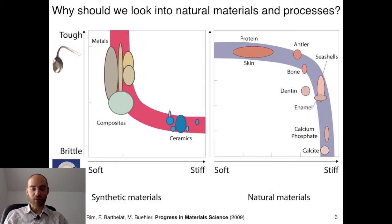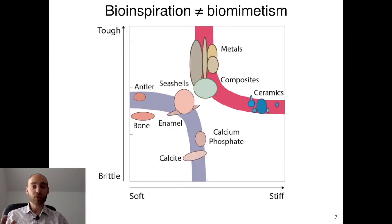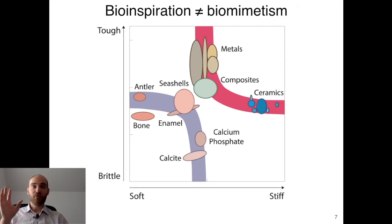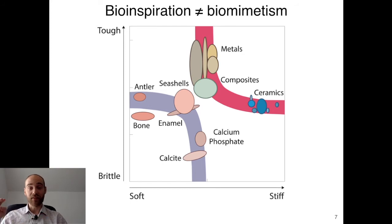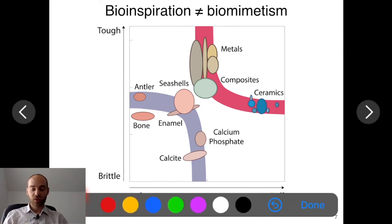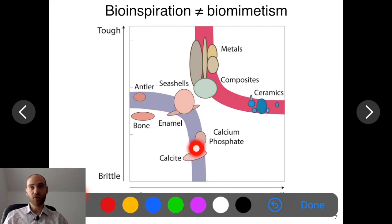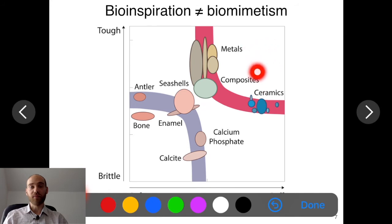I'm not trying to convince you we should make airplanes out of seashells. If you plot natural materials in the same graph, most of them are actually worse than any synthetic material. Our idea is not to reproduce seashells or bone or enamel one-to-one, but to understand how nature goes from these base materials to these high-performance composites, so that if we apply that to ceramics we can end up with something extremely stiff, strong, and tough.